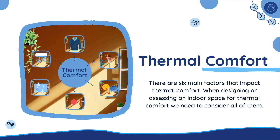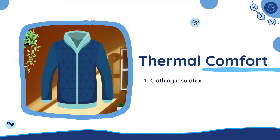When designing or assessing an indoor space for thermal comfort, we need to consider six main factors. The first one is clothing insulation. What we choose to wear is actually a form of personal insulation. We tend to add layers of clothing when we are cold and remove them when we get too hot. A person's size, age, and fitness level can all affect their thermal comfort.